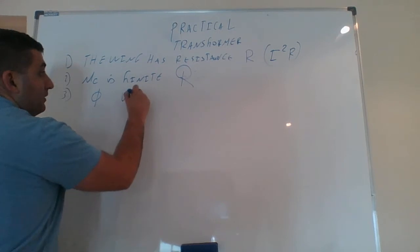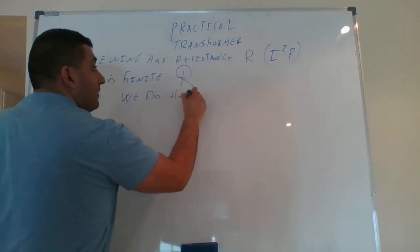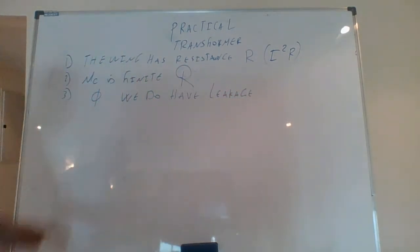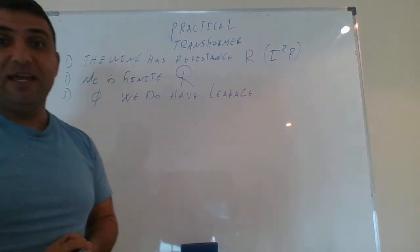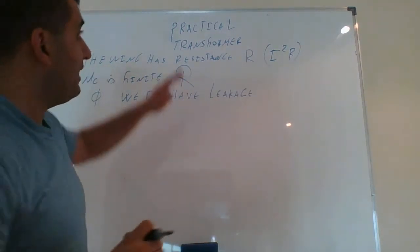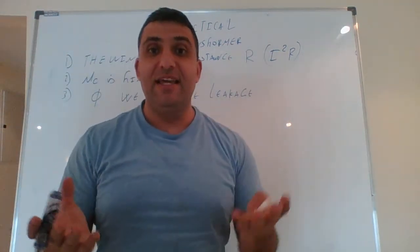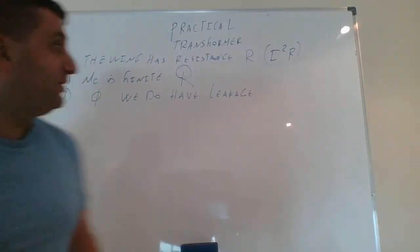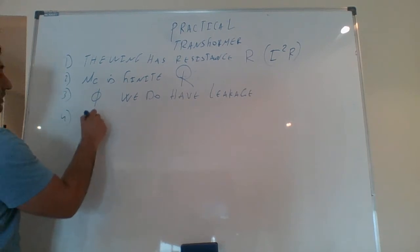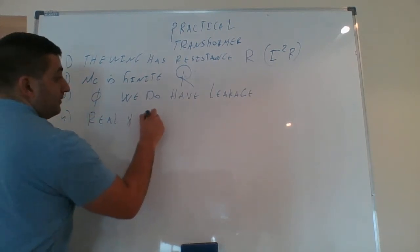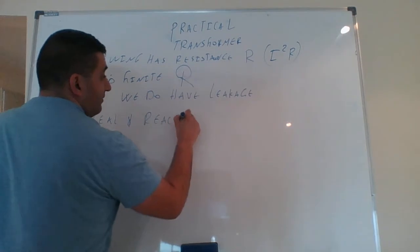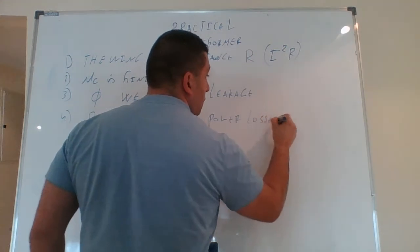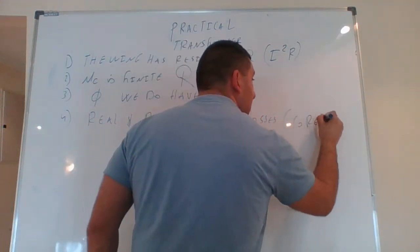In practical cases we do have flux leakage — phi is not confined within the transformer. Number four: previously in an ideal transformer we had no core losses, but in a practical transformer we have two types of core losses, real and reactive. So we have real and reactive power losses within the actual core of the transformer.